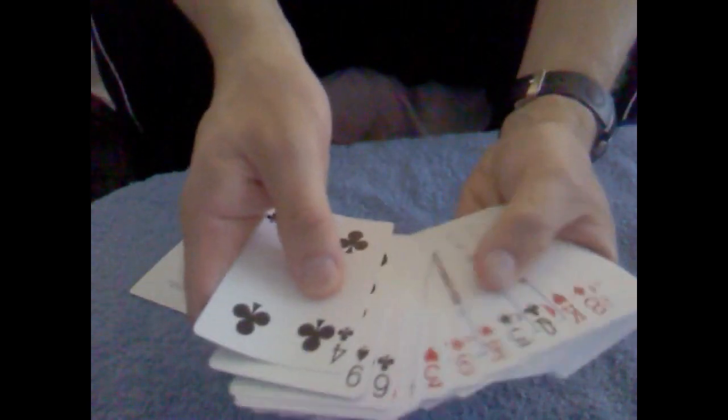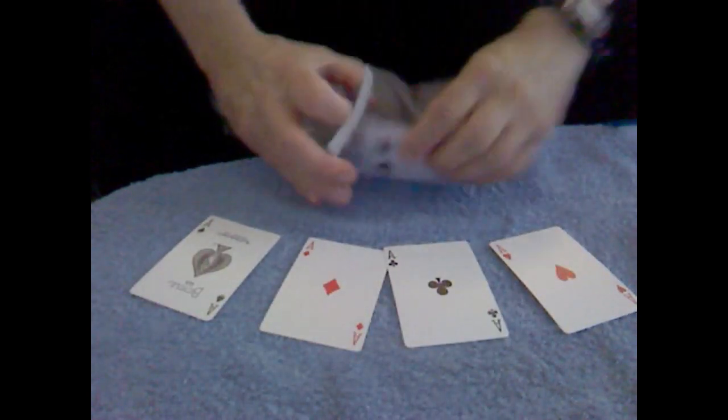It also involves an ordinary deck of bicycle playing cards, which I'll show you right here. And you can see that there are no aces anywhere in this deck, because the Four Aces are laying right here on the table.